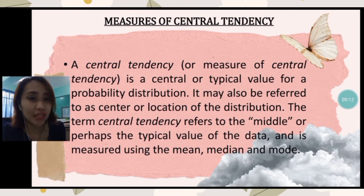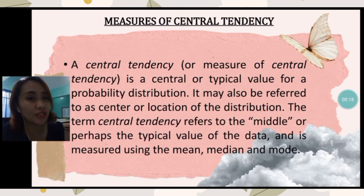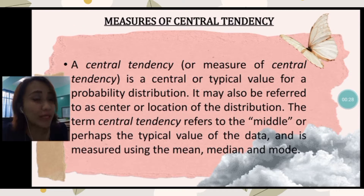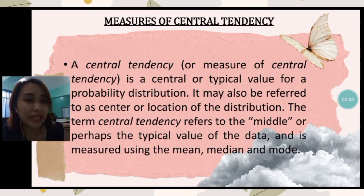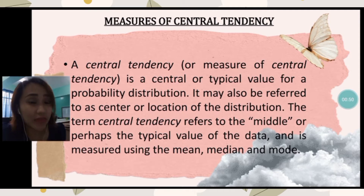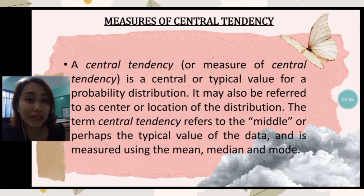To start with, we have here a definition. A central tendency or measure of central tendency is a central or typical value for a probability distribution. It may also be referred to as a center or location of the distribution. The term central tendency refers to the middle or typical value of the data and is measured using the mean, median, and mode. The measures of central tendency attempt to describe the set of data by identifying the central position within the set of data.